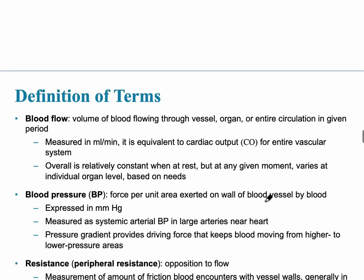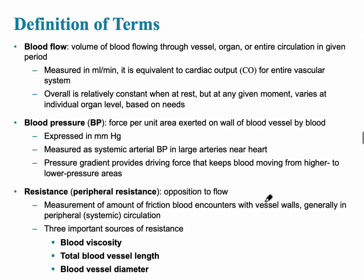Blood pressure involves a few important terms. Blood flow is the volume of blood passing through a vessel, organ, or the circulation in a given period, measured in milliliters per minute. It is equivalent to cardiac output, normally five to six liters per minute at rest, though it increases significantly with exercise and adapts to stress and blood pressure changes.